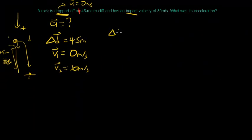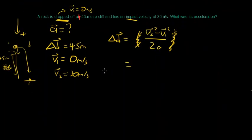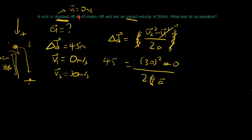Equation five: displacement equals (v2 squared minus v1 squared) over 2a. Plugging in: v1 is zero so v1 squared cancels out. We have 30 squared minus 0 over 2a, and displacement is 45. We need to rearrange and solve for a.